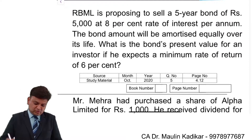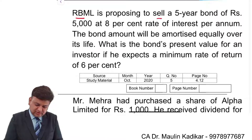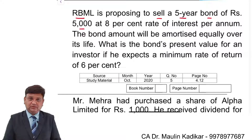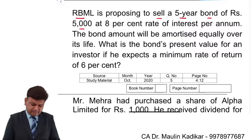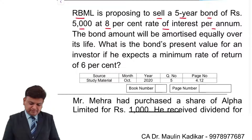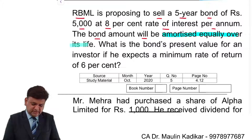Let us see the next question. RBML is proposing to sell a 5-year bond of Rs. 5000 — bond means very similar to a debenture — at 8% rate of interest per annum. The bond amount will be amortized equally over its life.